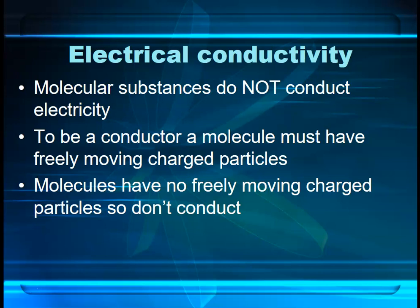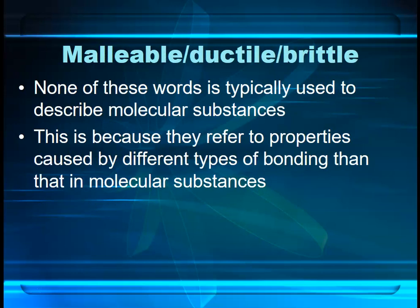The final property sometimes asked about is whether a substance is malleable, ductile, or brittle. None of those words really apply to molecular substances. Think about ice — would you describe it as malleable, ductile, or brittle? None of those terms fit. Malleability, ductility, and brittleness relate to a specific type of bonding, not the intermolecular bonding found in molecular substances.